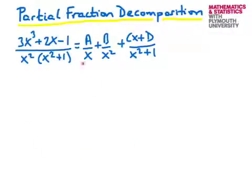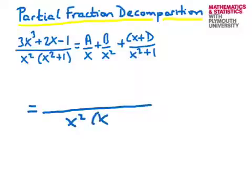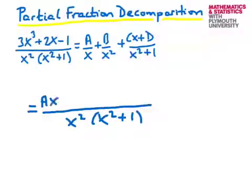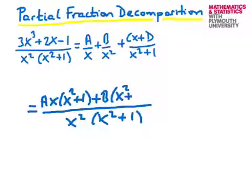The next step is to put these terms on a common denominator. Our common denominator is the original denominator, x² (x² + 1). The a/x term has to be multiplied by another power of x and also by (x² + 1), giving a·x·(x² + 1). Then b, already divided by x², needs to be multiplied by (x² + 1).